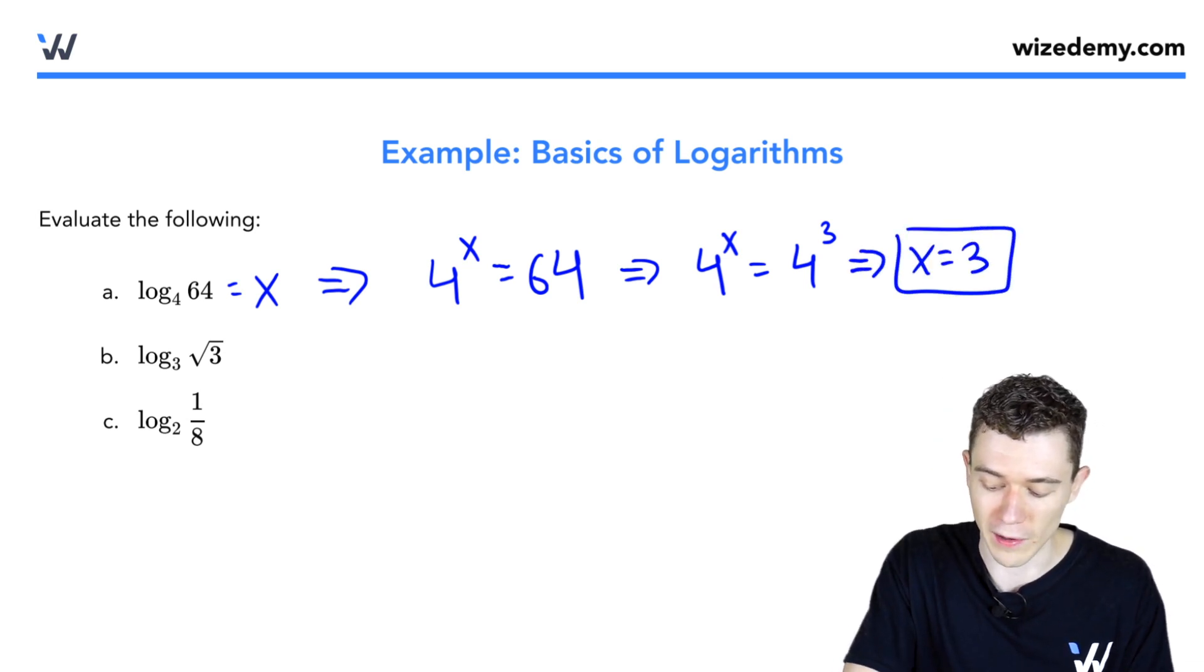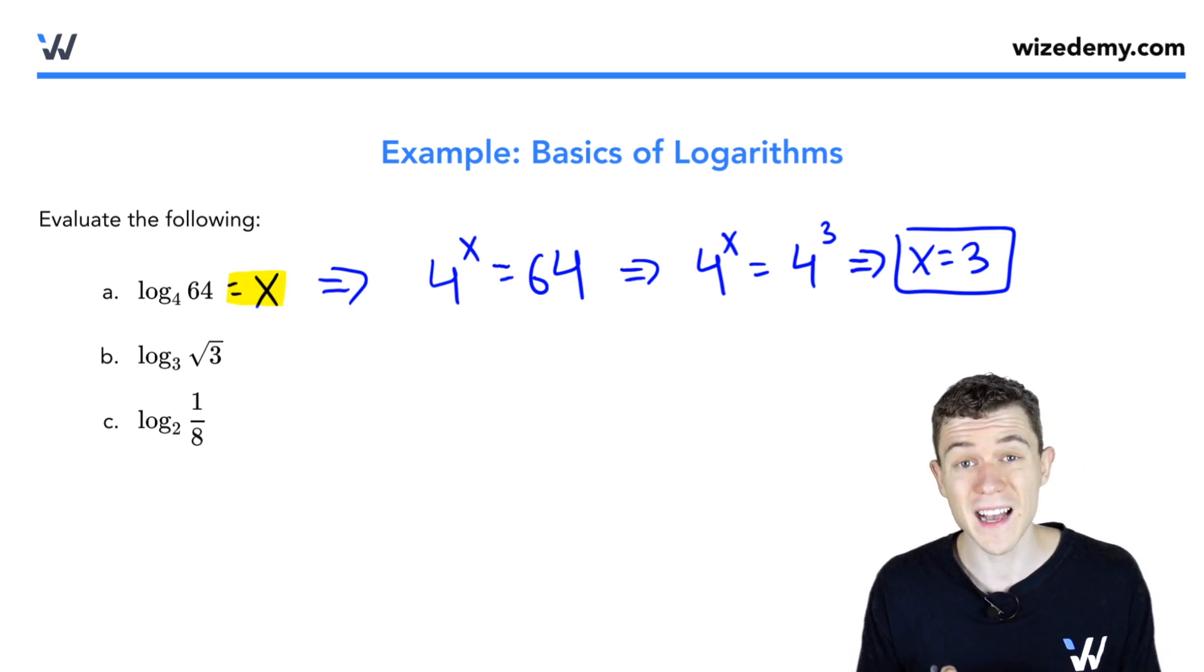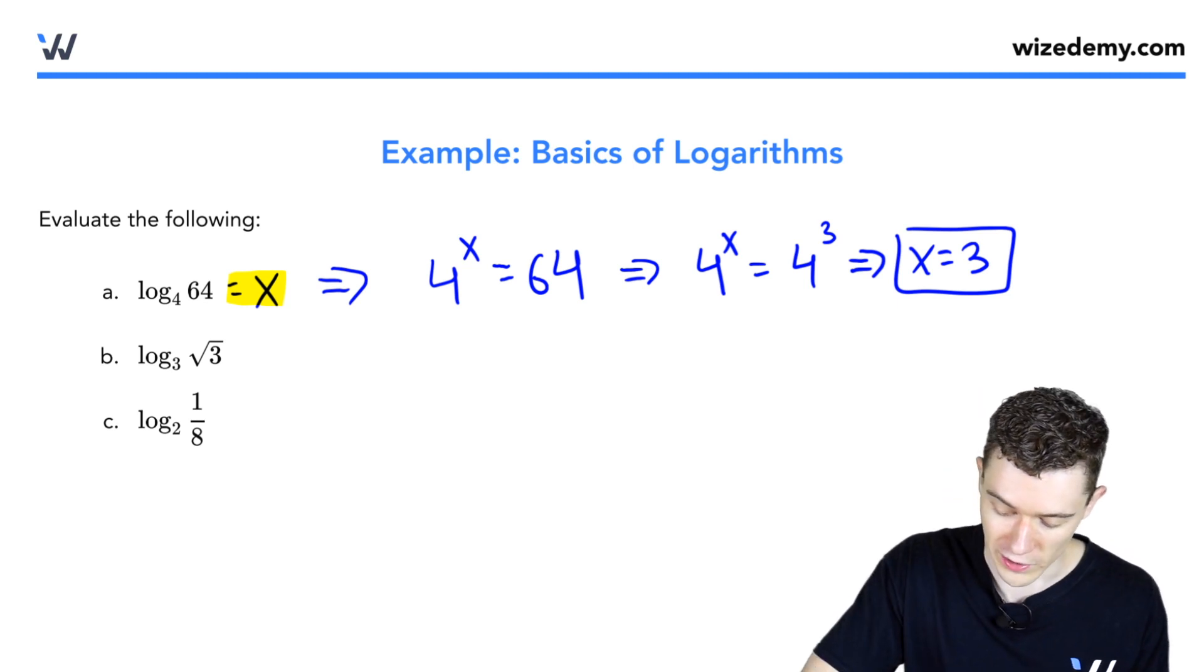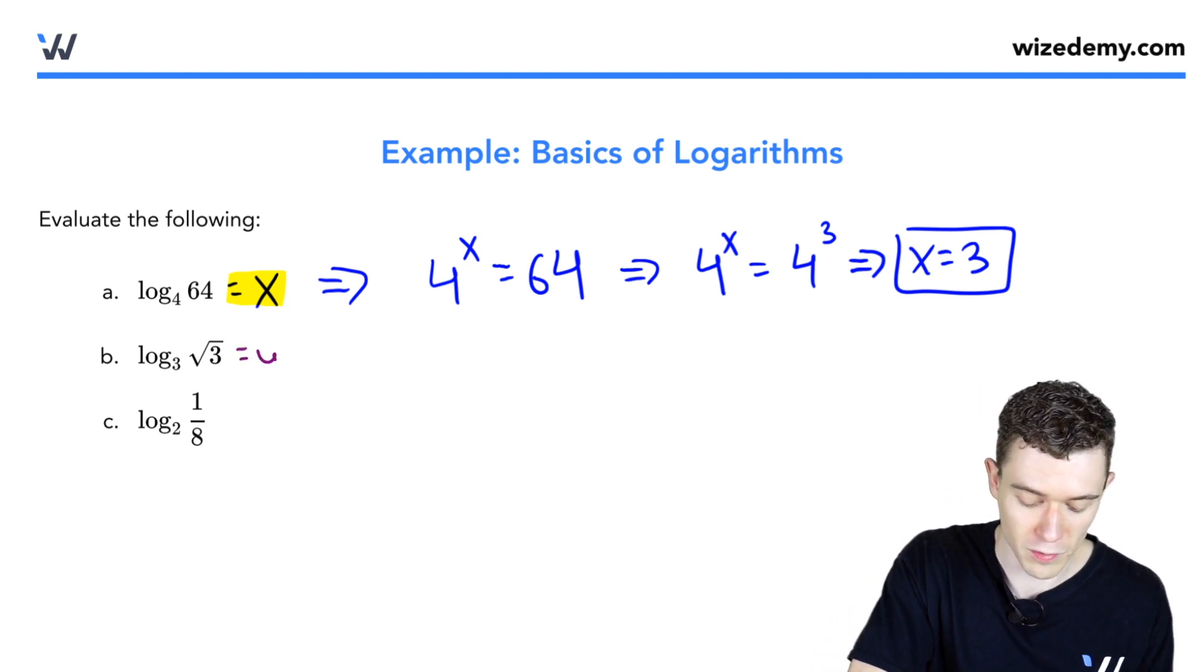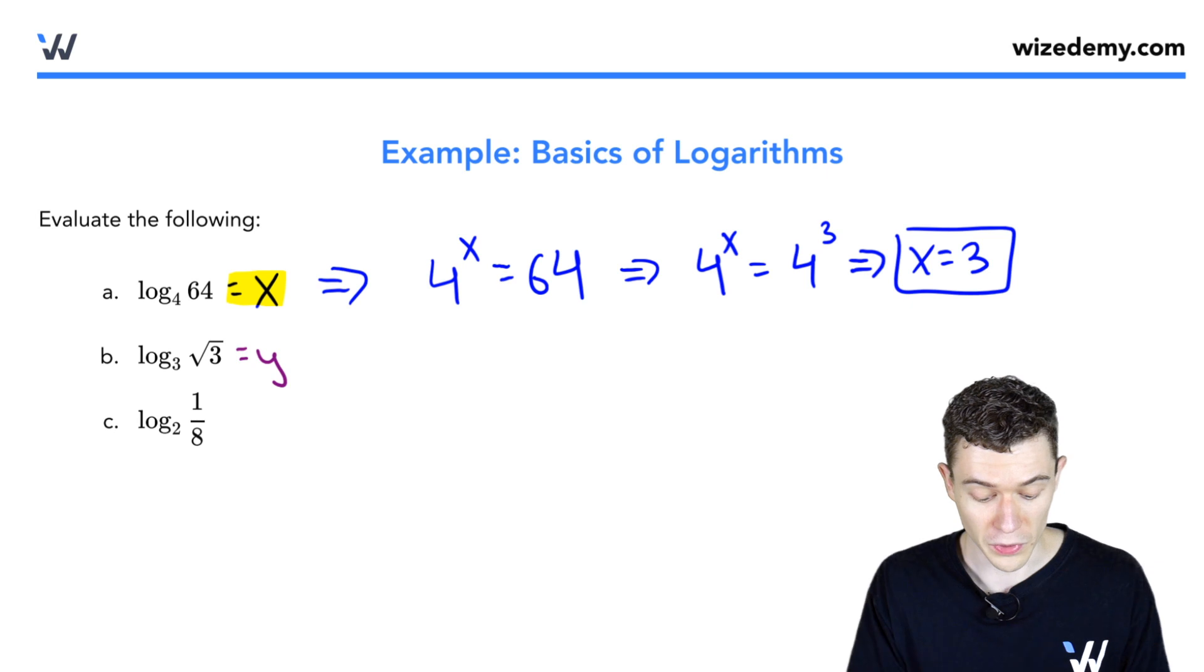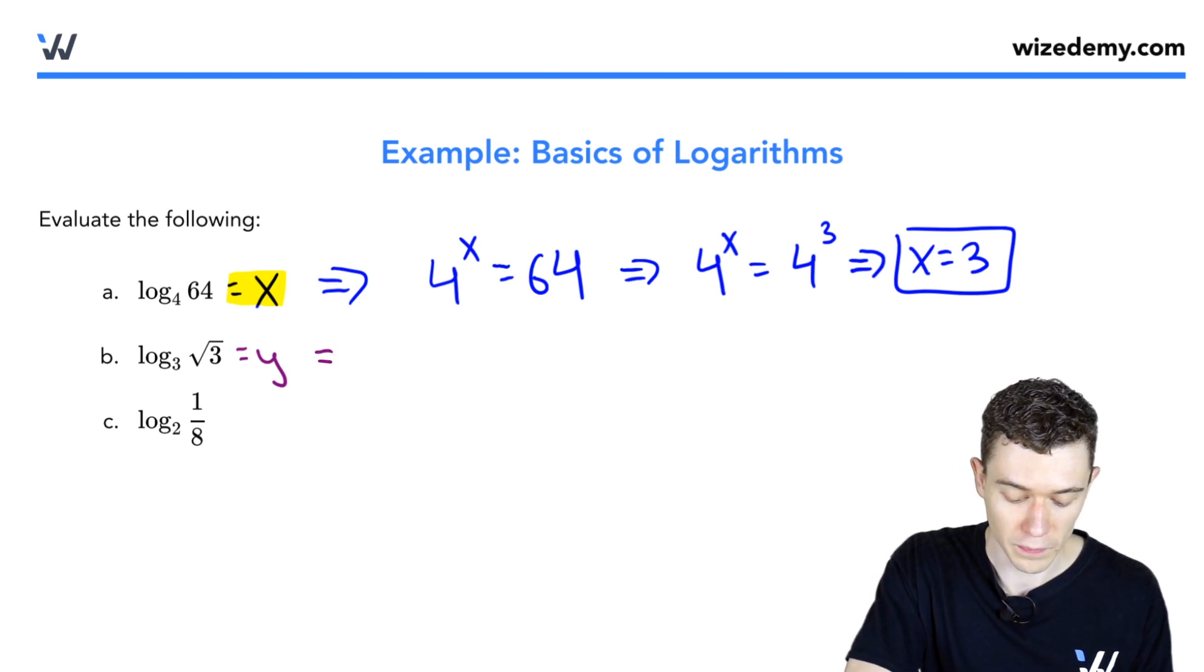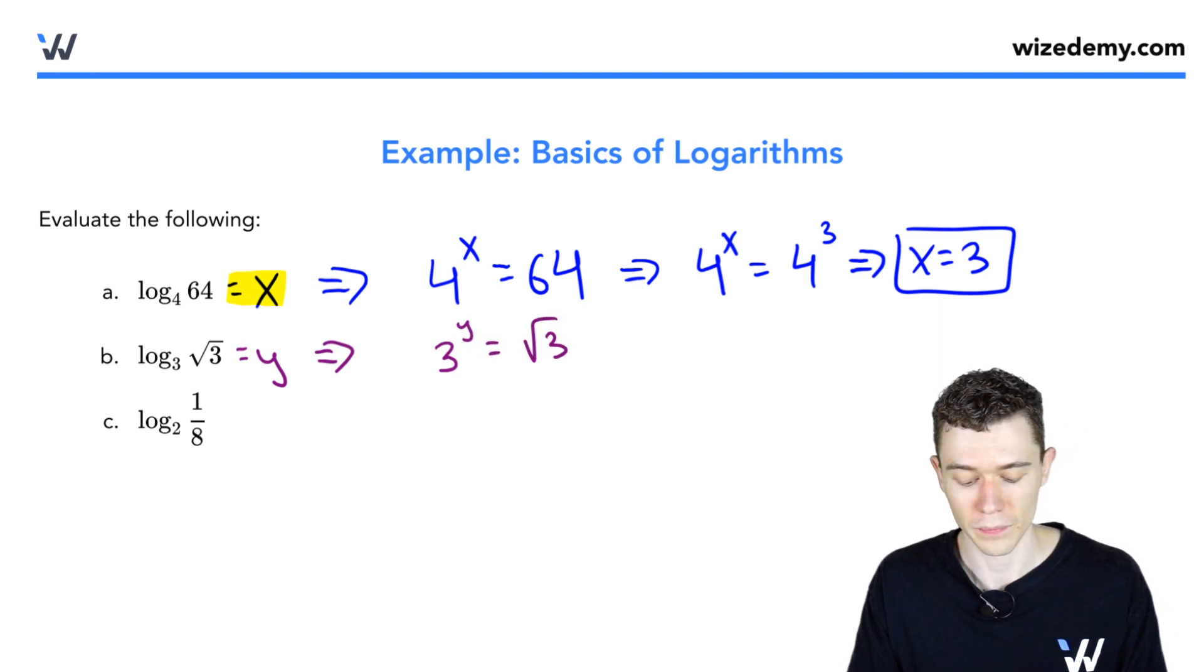Let's do the exact same thing for these other equations. Let's just call letter B y. And so this logarithmic equation, we put it in exponential form. This means 3 to the y equals square root of 3.